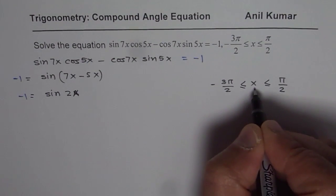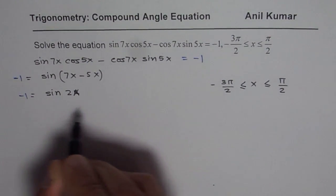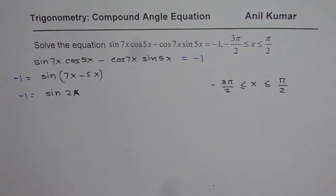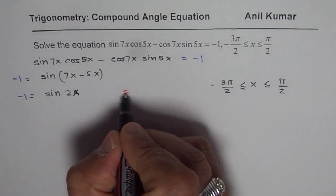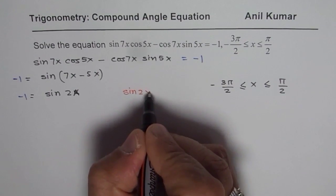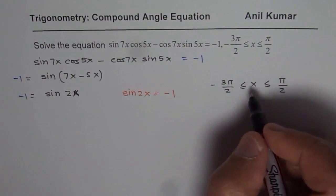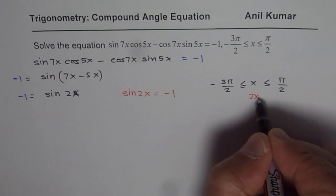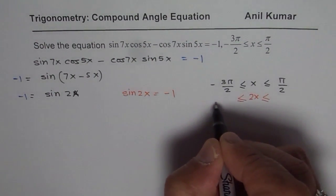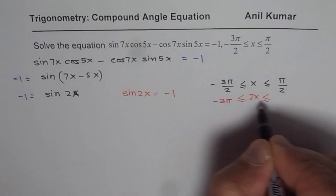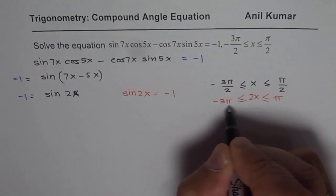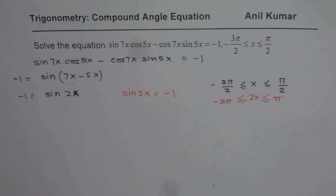That is the domain for x. What we have here is 2x. The equation which we are solving here is sin 2x equals to minus 1. We need to multiply this by 2. So, we get 2x and when you multiply by 2, you get minus 3 pi to pi. That becomes the domain for the given function.